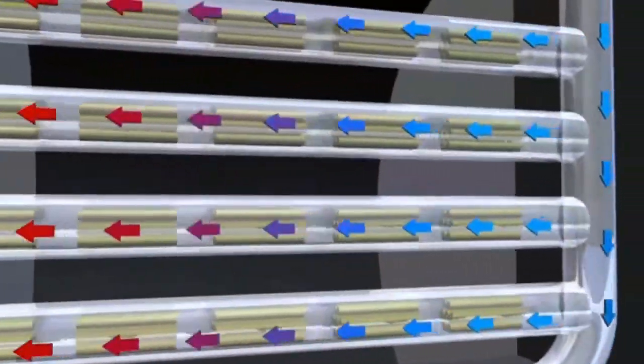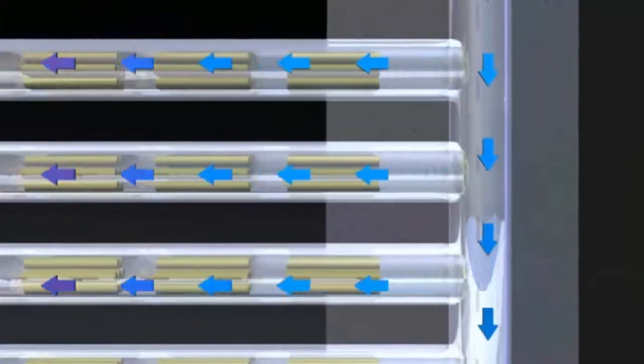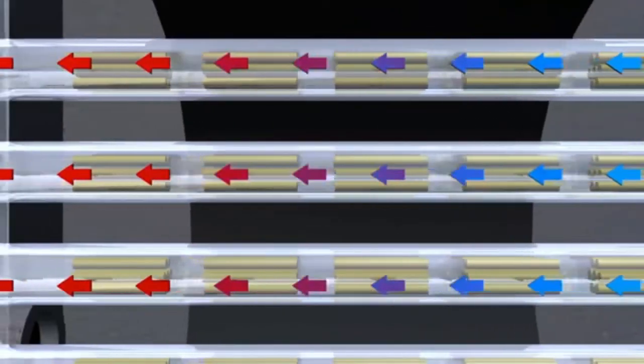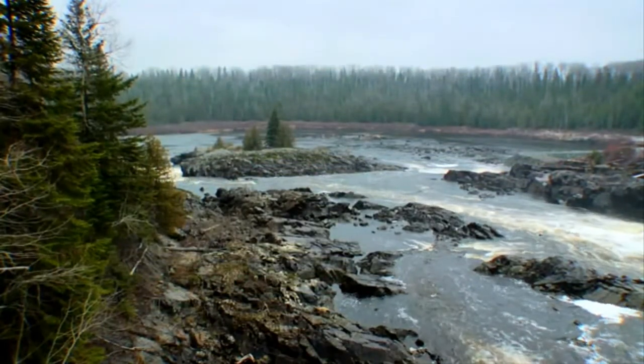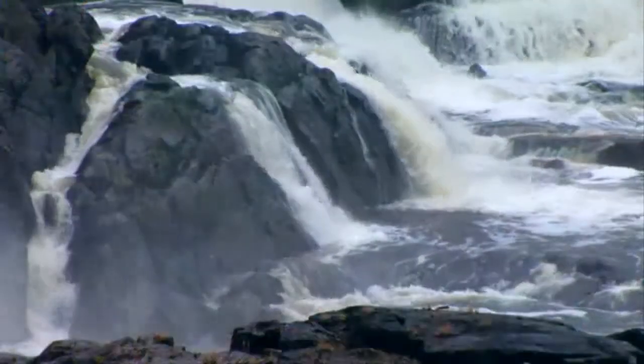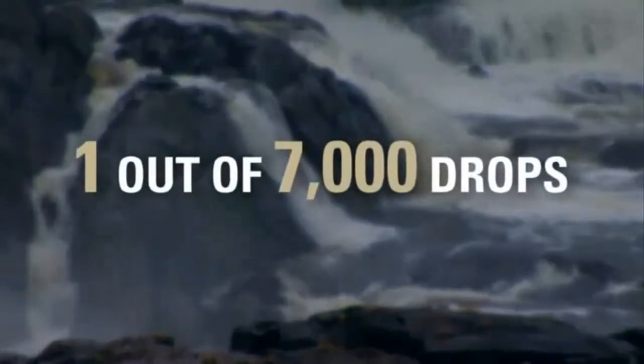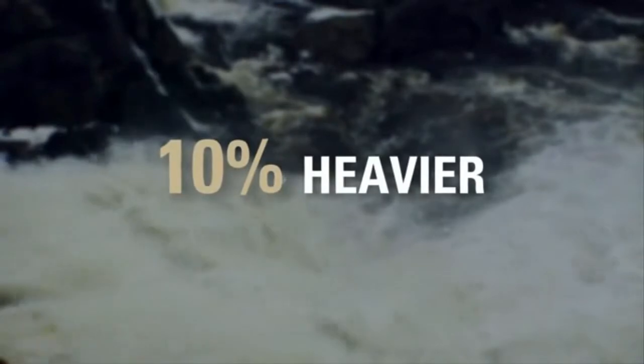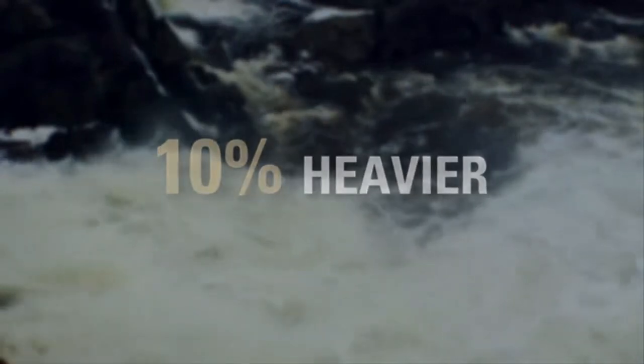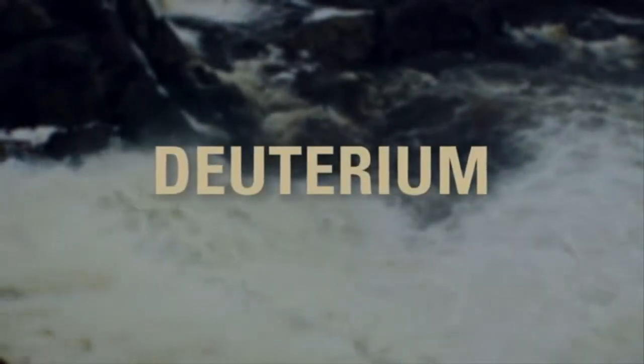In CANDU reactors, a special kind of water called heavy water flows around the fuel bundles. Heavy water is found in all water, rivers, lakes, and oceans. On average, one out of every 7,000 drops of water is heavy water. It's 10% heavier than ordinary water because it incorporates a heavy form of hydrogen called deuterium.